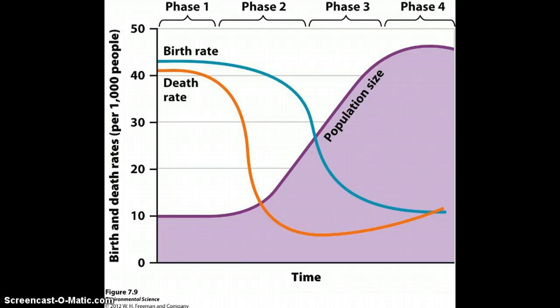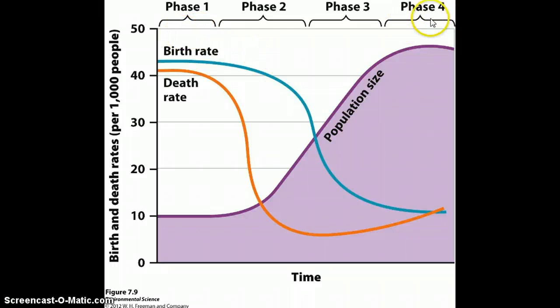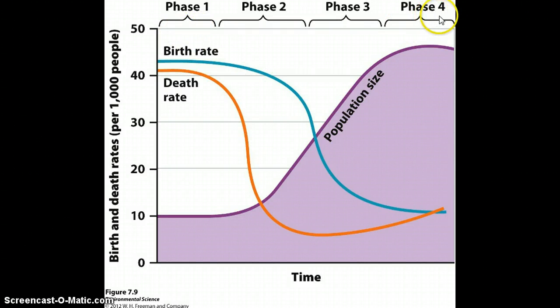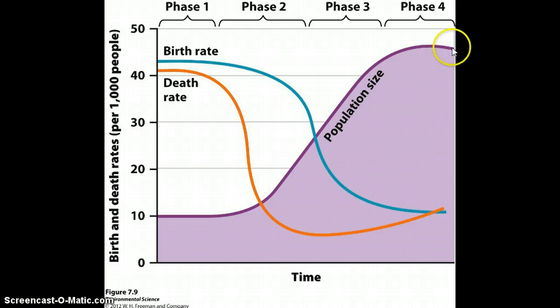So to summarize, as a country grows economically from pre-industrial to post-industrial, population growth is going to be slow, then rapid, then stable, and it will eventually begin to decline.